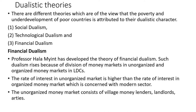If you look at poor, underdeveloped economies in the world, you could see that poverty and underdevelopment is something that these poor economies experience. As per many economists, this poverty or underdevelopment faced by poor countries could be attributed to their dualistic character. As a result, we have three sets of theories which basically look into three different arenas of dualism.